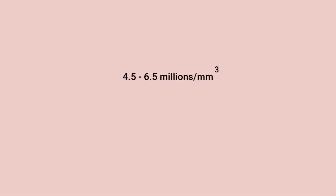A normal healthy human being has approximately 4.5 to 6.5 billion red blood cells per cubic millimetre of blood. Therefore, if a normal human being has five litres of blood in his body, there are approximately 32 trillion red blood cells constantly circulating in the circulatory system.